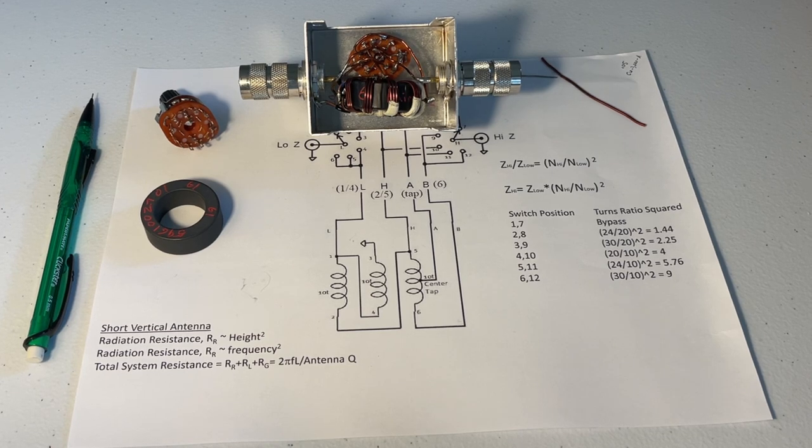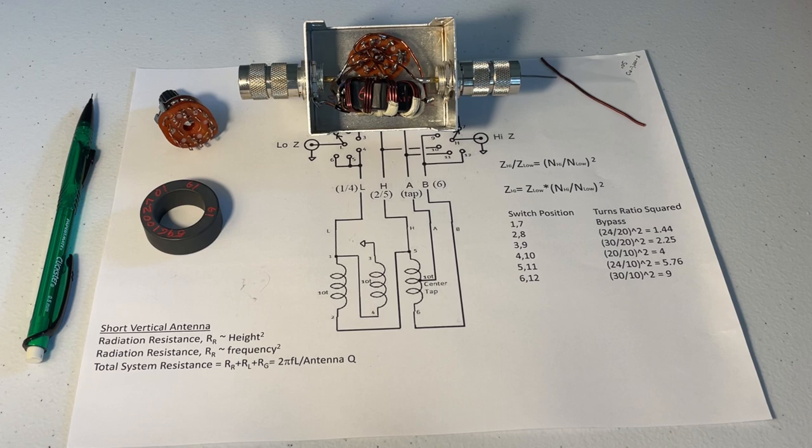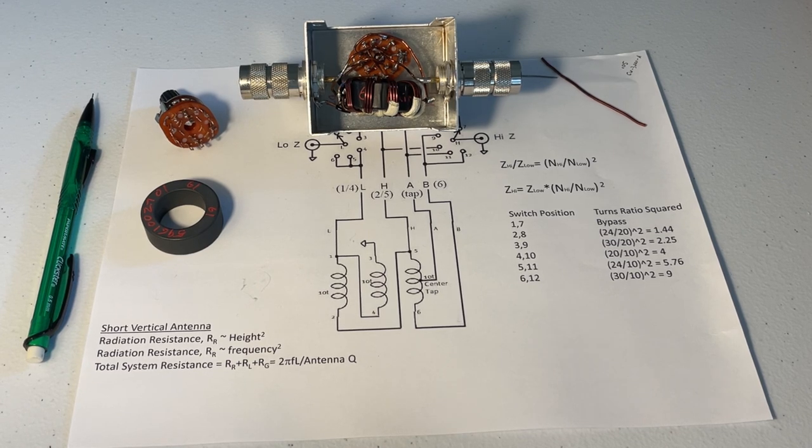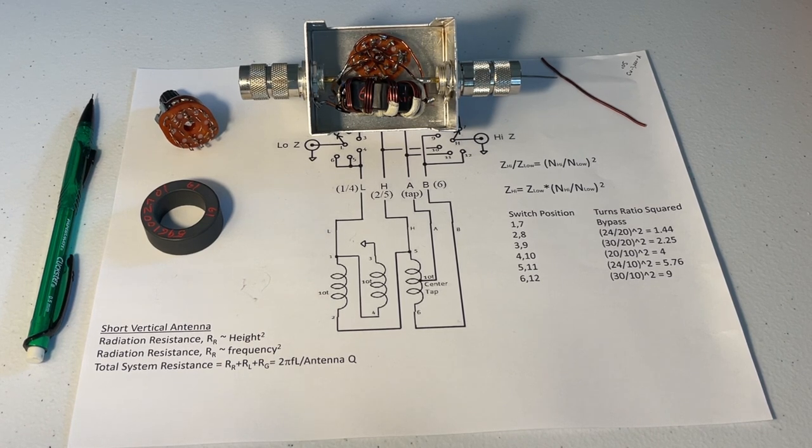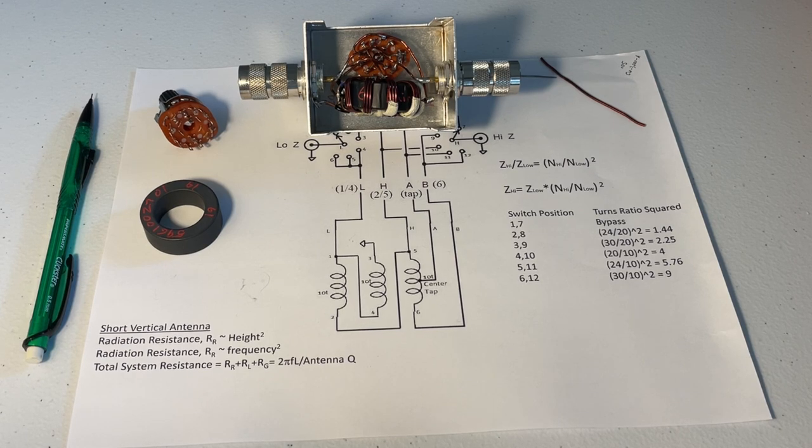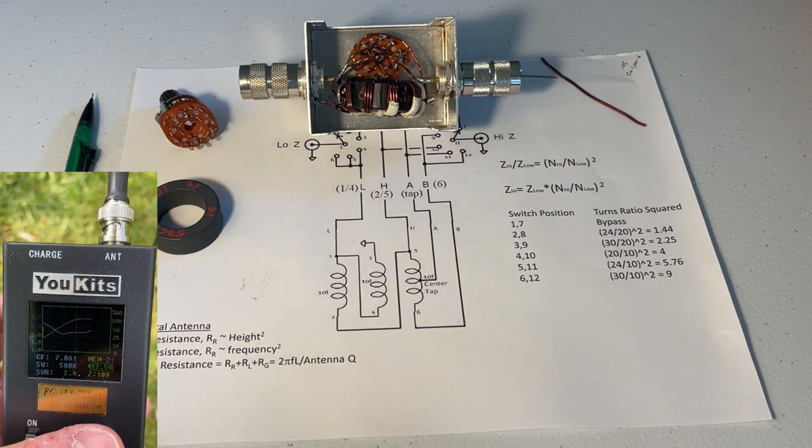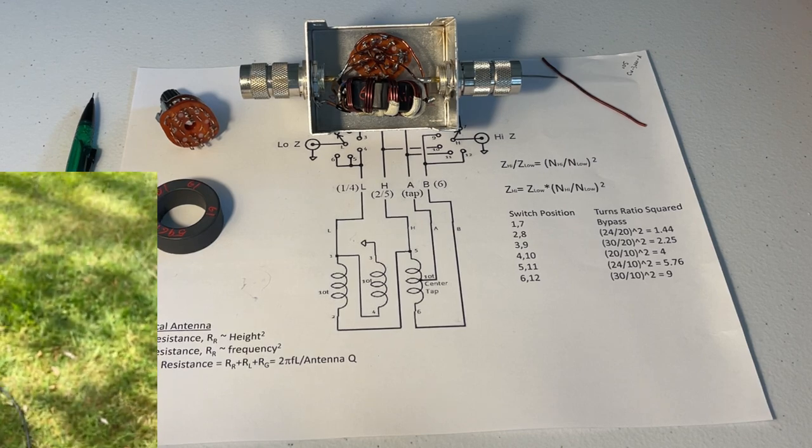Because the radiation resistance is so low, the efficiency of the antenna suffers drastically. That's one of the reasons I like to use center loaded short vertical antennas as opposed to base loaded, because if you work the numbers out they are generally on the order of about twice the efficiency, everything else being the same.